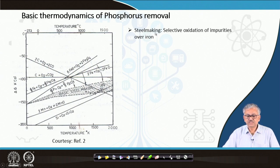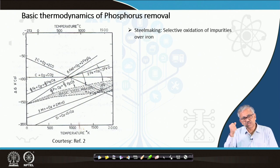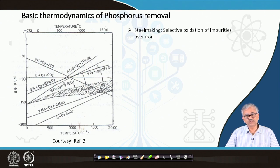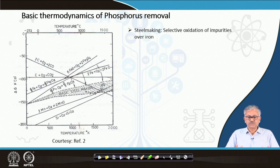In steelmaking, it is a selective oxidation of impurities over iron. If you want to oxidize the impurities, iron will also get oxidized — that is natural. When you charge oxygen into the liquid bath, iron is 95% by weight, so by the law of mass action, iron is what gets oxidized first. We have to oxidize the impurities in preference to iron; otherwise, yield will be very low and a lot of iron will be lost through the slag.